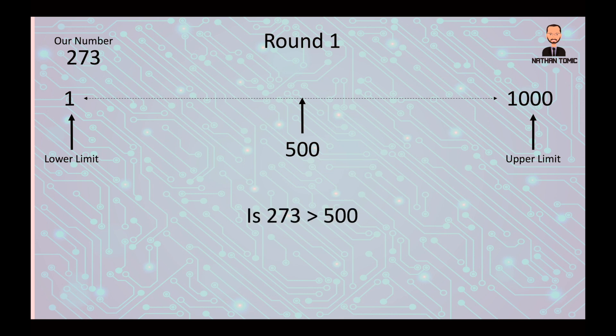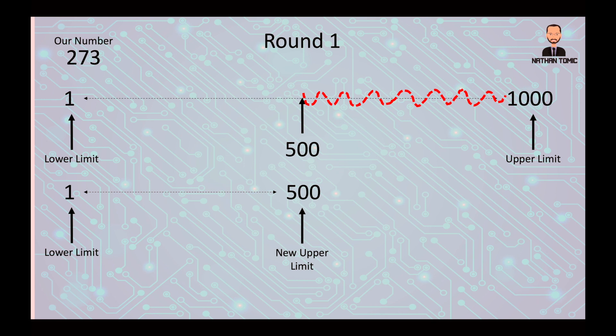We're now asking is 273, our number, greater than 500. You could use the less than option but I'm sticking with greater than in this video. Is 273 greater than 500? Of course it's not. So everything from 501 up is now gone. We cannot have 501, 502 all the way up to 1000. We have halved the possible values. Our new lower limit is 1 and our upper limit is 500. Remembering the question was greater than 500, so 500 is still in the mix. It could be 500, and all the values in between.